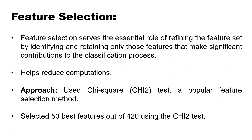Feature selection serves the essential role of refining the feature set by identifying and retaining only those features that make significant contributions to the classification process, helping reduce computation. For that, we used the Chi-square test, a popular feature selection method. We selected the 50 best features out of 420 using the Chi-square test.